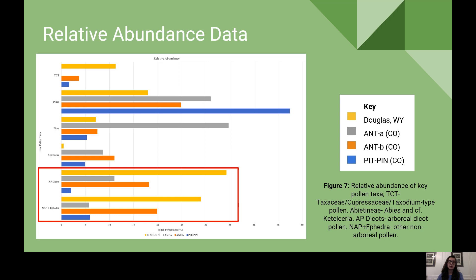The most notable finding was this angiosperm dominance, visible in the AP dicots and NAP plus ephedra groups. Our data showed a 15 to 20 percent higher percentage compared to pollen counts from the Antero localities, indicating a unique signature for the Douglas-Wyoming site. This was helpful in understanding similarities and differences in elevation and environment between Wyoming and Colorado, and confirmed that Wyoming was experiencing different climatic conditions.